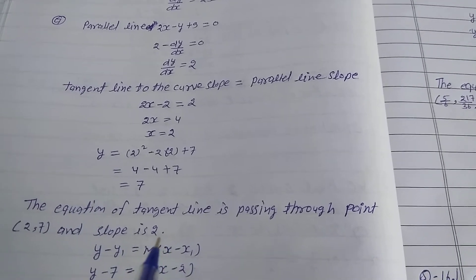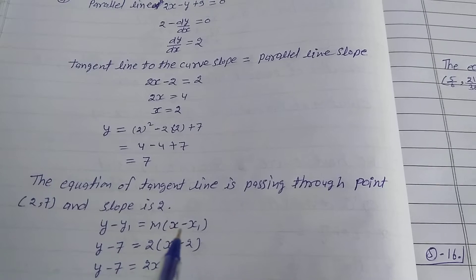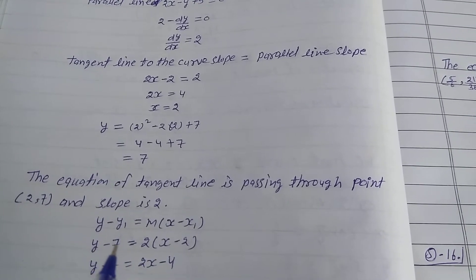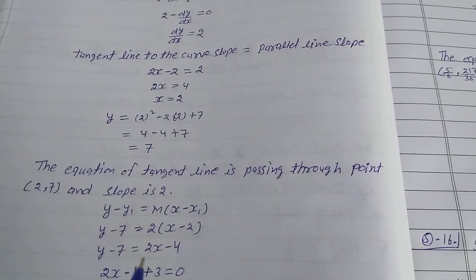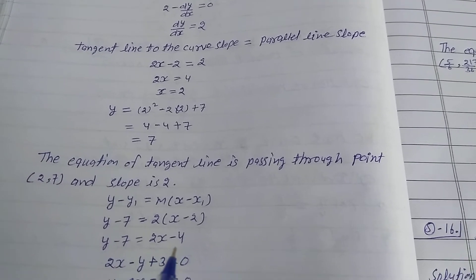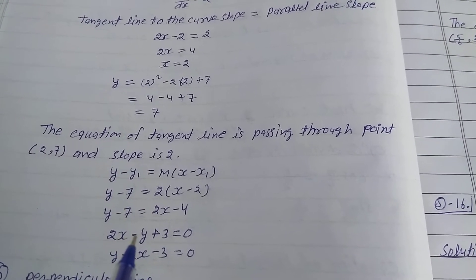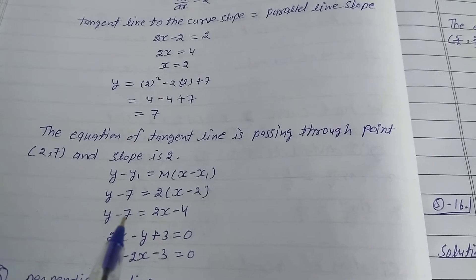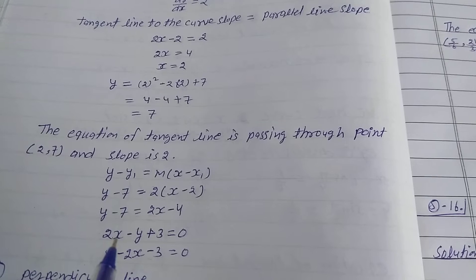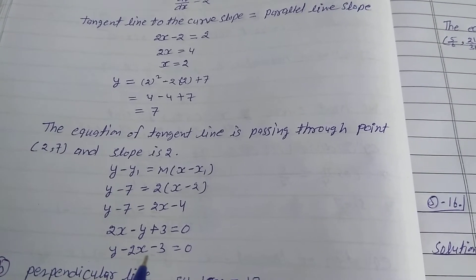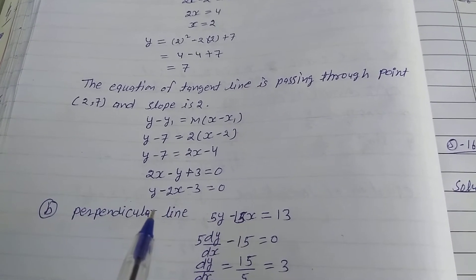The tangent line passes through point (2, 7) with slope 2. Using the point-slope formula y - y₁ = m(x - x₁): y - 7 = 2(x - 2), so y - 7 = 2x - 4. Rearranging: 2x - y + 3 = 0, or equivalently y - 2x - 3 = 0. This is the tangent equation parallel to the given line.